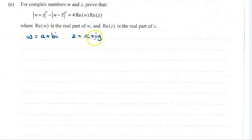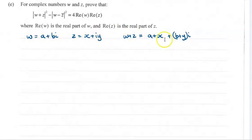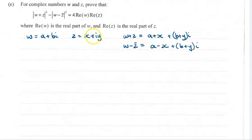Now the pieces of what we've got are w plus z. If we add these two things together, we're going to add the real parts and add the imaginary parts. And w minus the conjugate of z — remembering that conjugate is the opposite — so it'll be w subtract the conjugate, which is x minus iy.